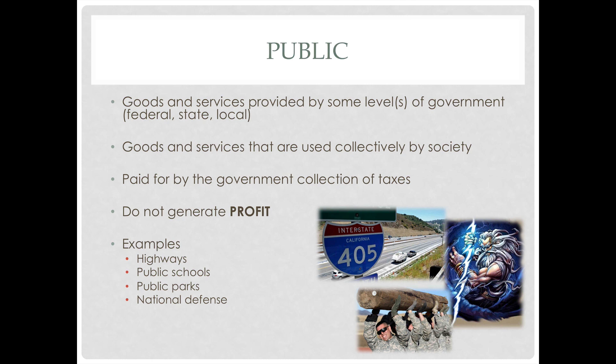Now let's look at the difference between something that is public versus something that is private. Public goods and services are provided by some level of government — federal, state, or local. These are goods and services used collectively by society. Since they are created by the government, the intention is that they are accessible by all people, by all citizens in the nation. The government really isn't in the business of making profit — its purpose is to provide for the items listed in the preamble to the Constitution. Since public goods and services don't create profit, they are paid for by the government's collection of taxes.